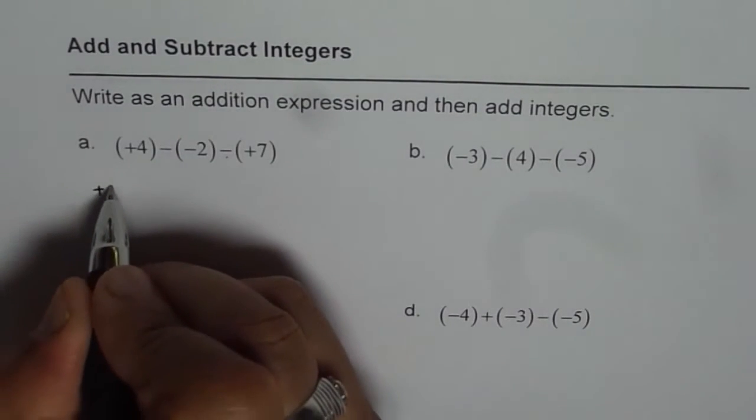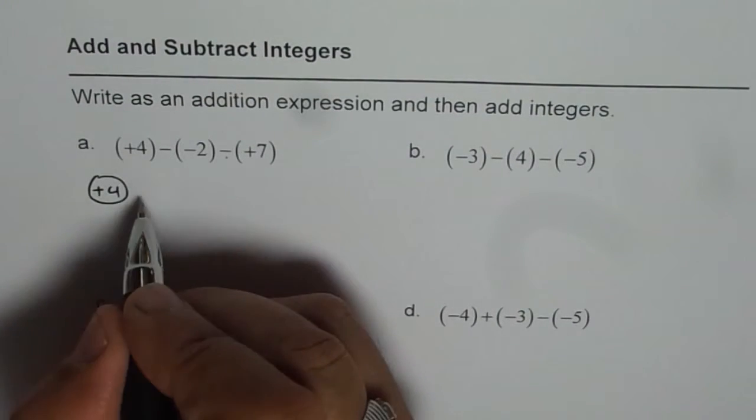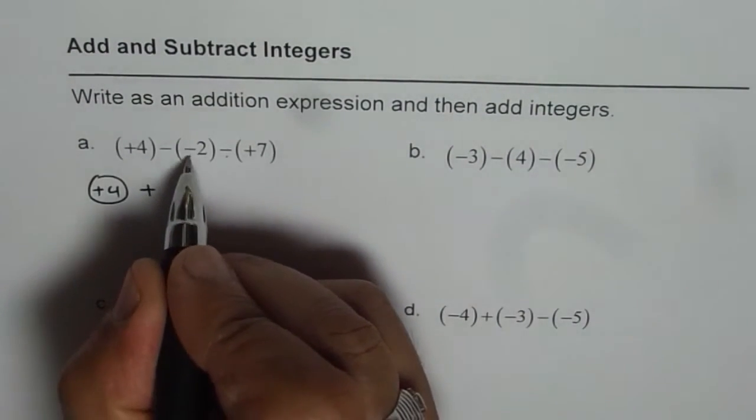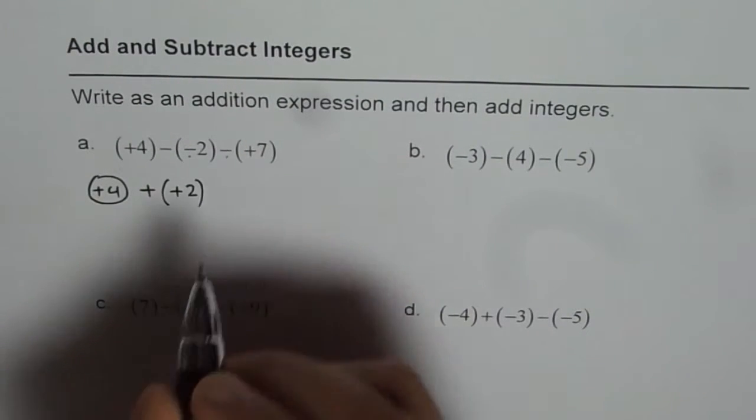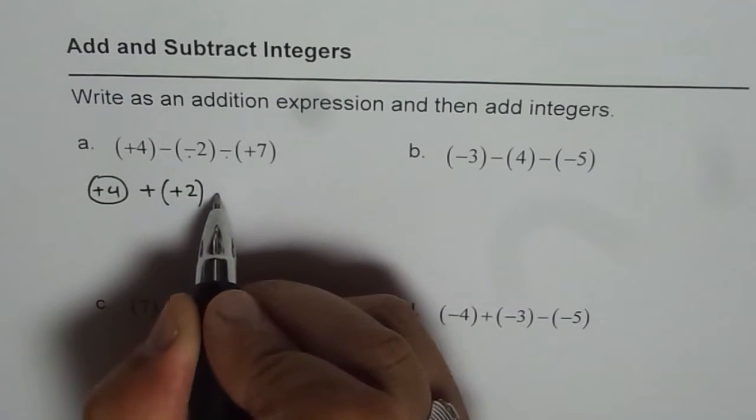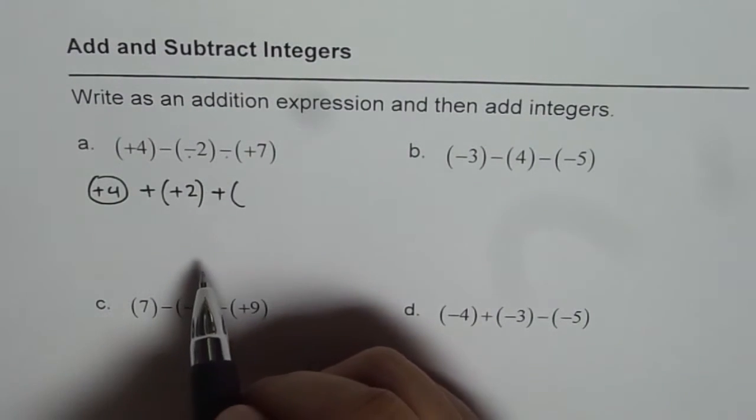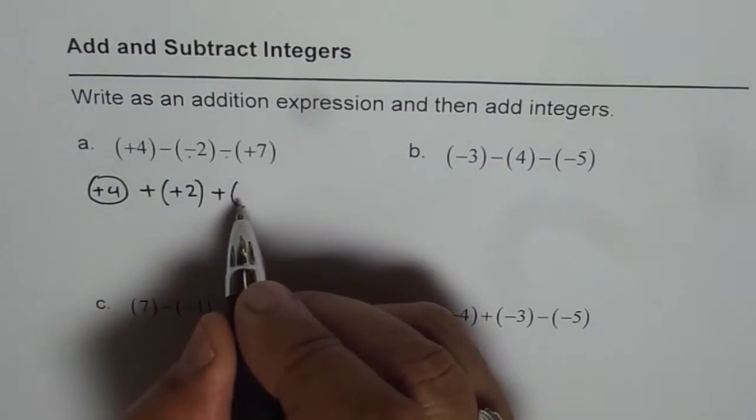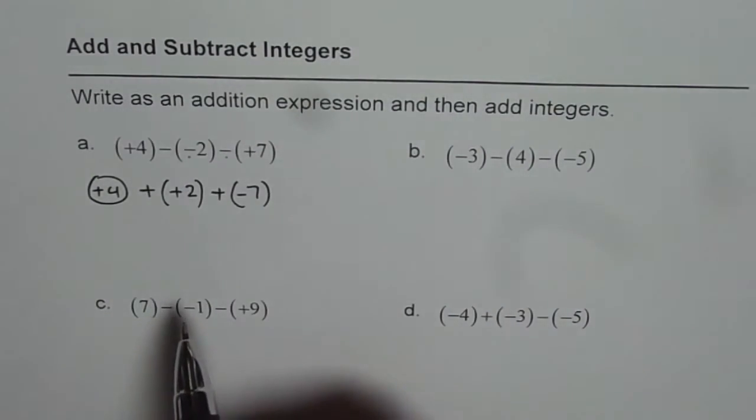So we have positive four. Let us start with positive four. And then with negative I want to reverse this sign. So when I reverse it inside sign will also change and becomes plus two. Next takeaway becomes positive. Instead of takeaway plus seven we will do add minus seven. Now both are same things. Take away plus seven is same as add minus seven.